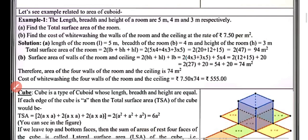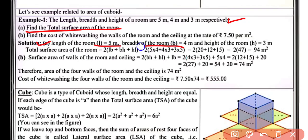Example 1: The length, breadth, and height of a room are 5 m, 4 m, and 3 m respectively. Find the total surface area of the room. Given: l = 5 m, b = 4 m, h = 3 m. Total surface area = 2(lb + bh + hl). Substituting all values, we get 94 m².